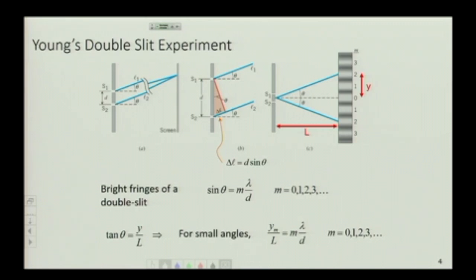And you can assume that the tangent of the angle and the sine of the angle are equal. So the tangent of the angle gives you the vertical separation between the fringes, that can be written in terms of this.